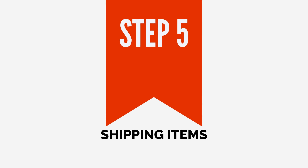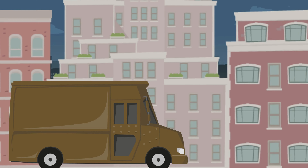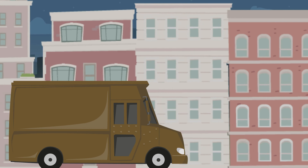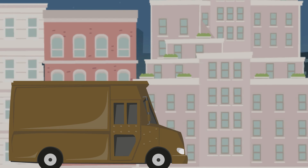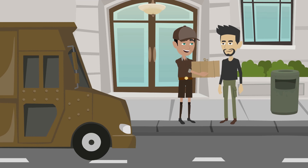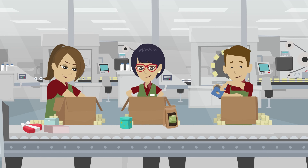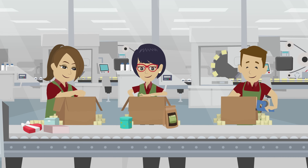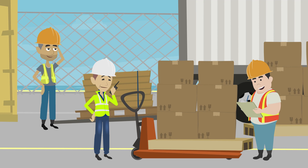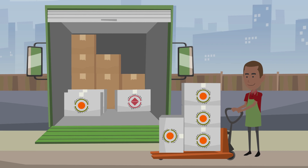Step 5: Shipping items. The final step in the inventory flow process is shipping the items to the customer. This involves packing the items securely, printing shipping labels, and preparing the shipment for transportation.